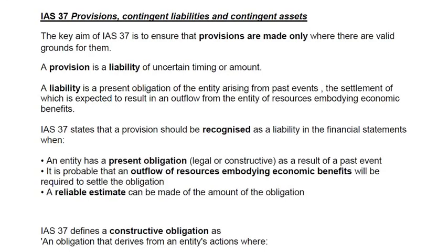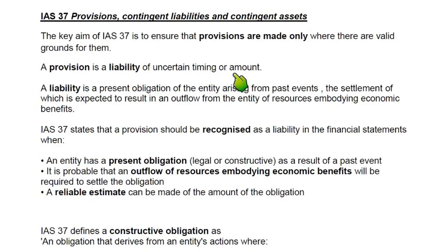Hello, this is ARD, your accounting coach, and the topic of the day is IAS 37, which governs provisions, contingent liabilities, and contingent assets. It has three components, the first of which is provision. Provision is defined by IAS 37 as a liability of uncertain timing or amount — we are not sure how much we need to pay or by when.